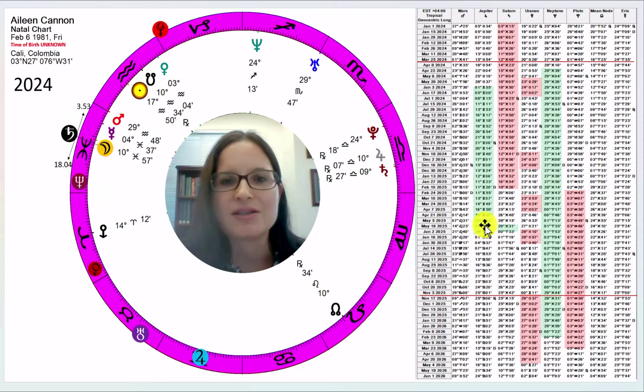Then there are other counterpoints here, like Jupiter is much better placed. And overall, I would say that the odds of her getting into trouble, particularly right away in April, they definitely drop a whole lot with a February 6th, 81 chart.